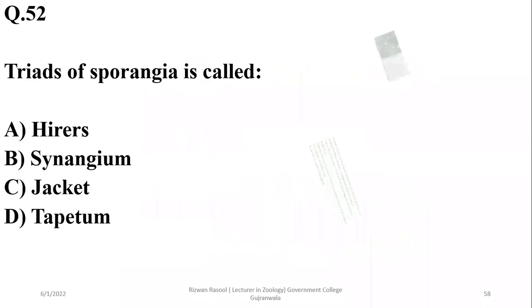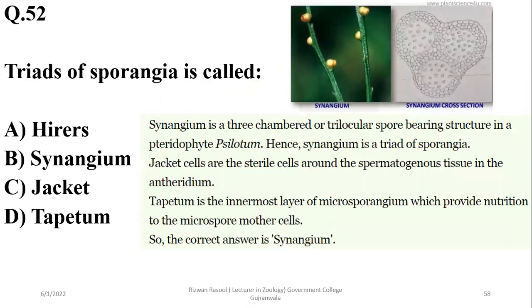Number 52. Clusters of sporangia, they are sori — usually in ferns, so the right option is beta. While the jacket is covered in sterile cells, tapetum is the innermost layer of microsporangium, which provides nutrition to the microspore mother cells.